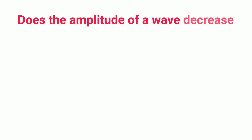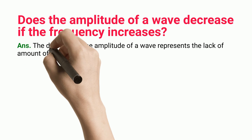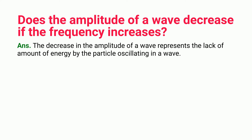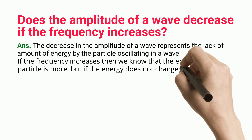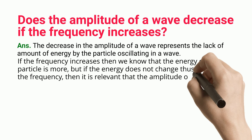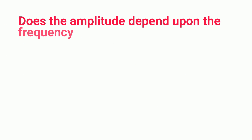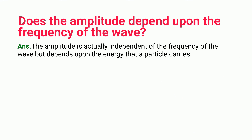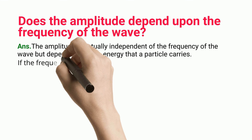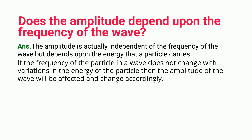Does the amplitude of a wave decrease if the frequency increases? The decrease in amplitude represents a lack of energy by the particle oscillating in the wave. If the frequency increases then the energy of the particle is more, but if the energy does not change while increasing the frequency, then it is relevant that the amplitude of the wave is decreased to increase the number of oscillations. The amplitude is actually independent of the frequency of the wave, but depends upon the energy that a particle carries. If the frequency does not change with variations in energy, then the amplitude will be affected and change accordingly.